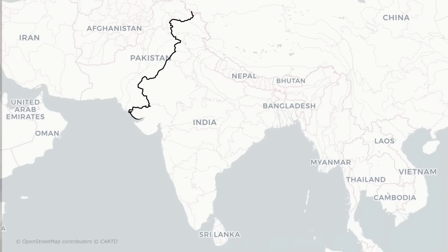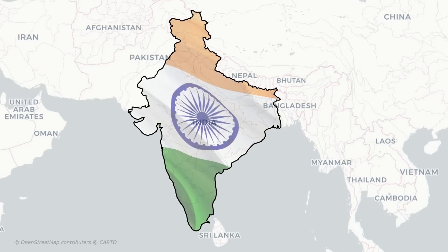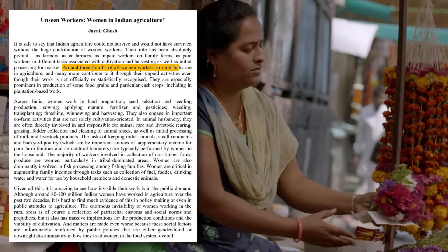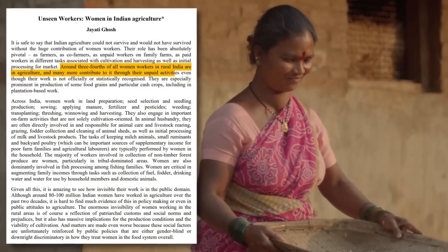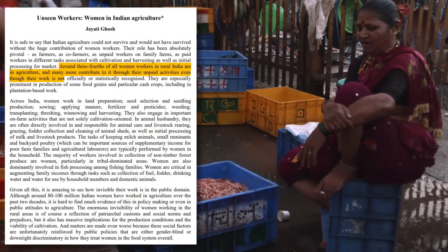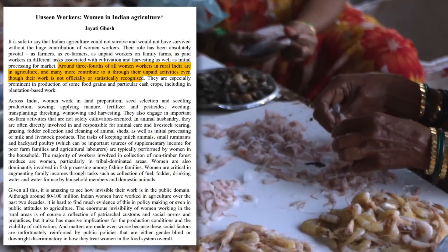Countries that are less economically developed traditionally tend to have more traditional cultural norms and gender roles for women. These roles have often been in place for many years and are well established in society, and they frequently limit the opportunities that individuals in a country have. We can see this noted in India, for example, where around three-fourths of all women workers in rural India are in agriculture, and many more contribute to it through unpaid activity, even though their work is not officially or statistically recognized.